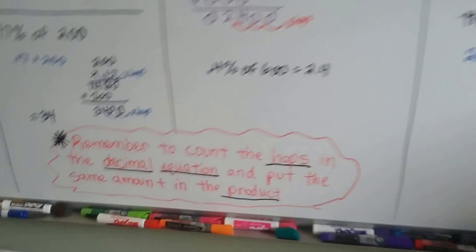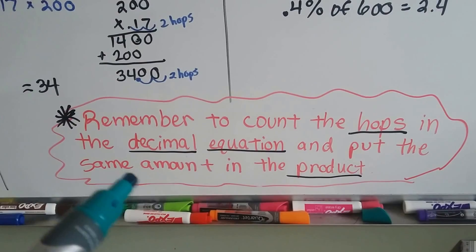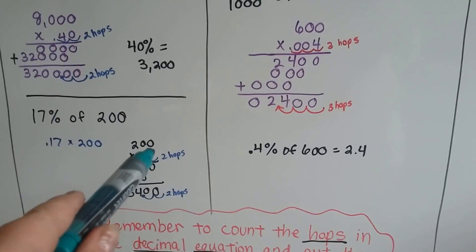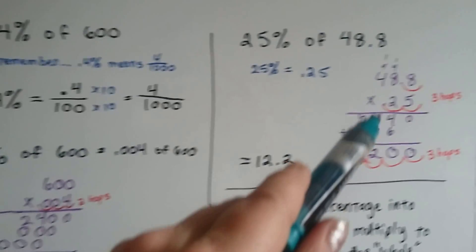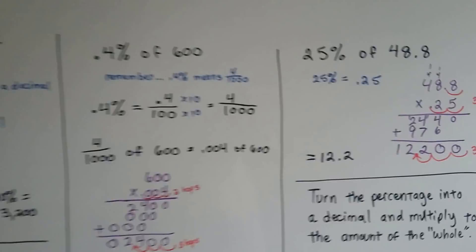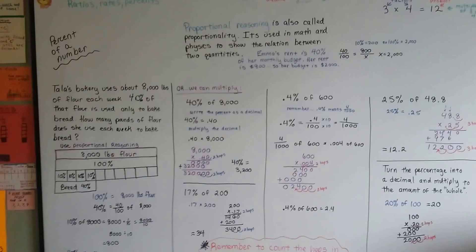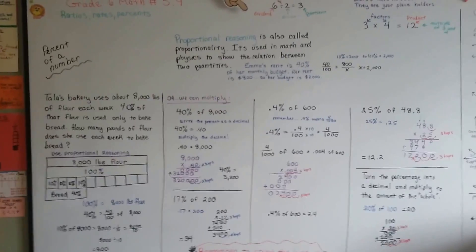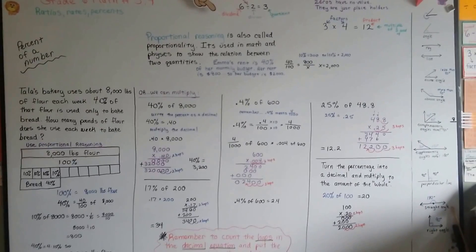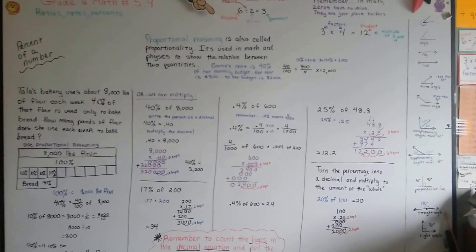So just remember to count the hops in the decimal equations. If you don't, you're going to end up with the wrong answer. You just count the hops and put that many hops into the product. Whether there's only hops for one number or if there's hops for both. You count them all and that's how many you put into the product. So that's not that hard, is it? That's how you find the percent of a number. That's how you use proportional reasoning to find it. And that's how you use multiplication to find it. I think you can do this. It's not really that hard. It's just multiplying decimals. Keep trying. Keep up the good work and I'll see you next video.